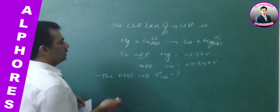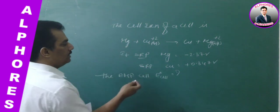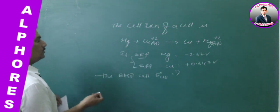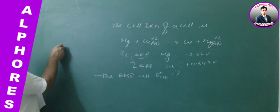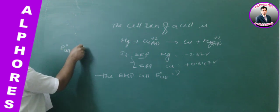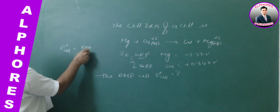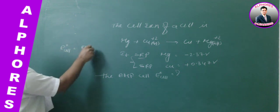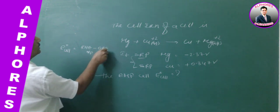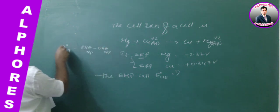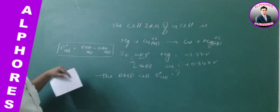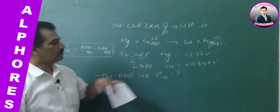Then the standard EMF of the cell, E0 cell, is how much? As we know, when both SRP values are given, simply E0 cell is nothing but RHE SRP minus OHE SRP. This is the formula we learned in the previous session. By using this formula, we have to substitute these values. Now, which is OHE and which is RHE?